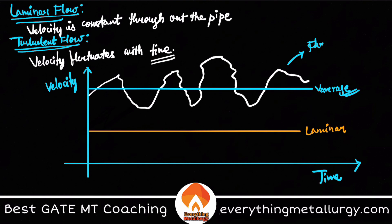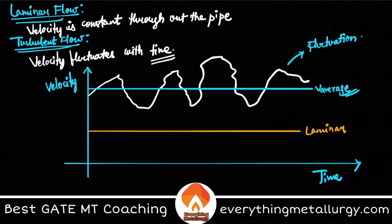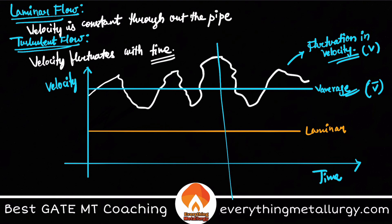In turbulent flow, the velocity can be seen as two components: v-bar, which is the average velocity, and the actual instantaneous velocity v. The deviation at any particular time — meaning v minus v-bar — represents the fluctuation. These are important concepts for understanding how the nature of fluid flow can be studied with respect to velocity.